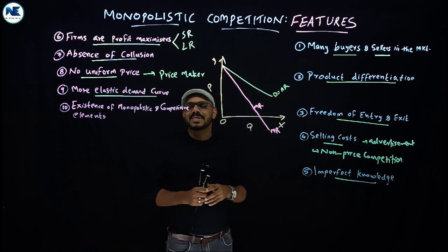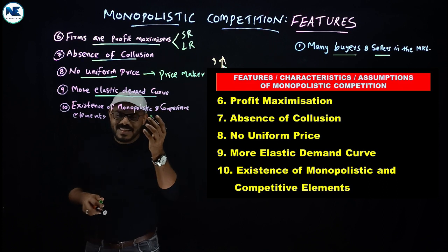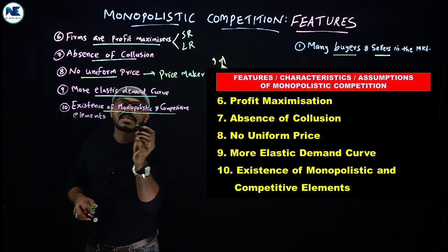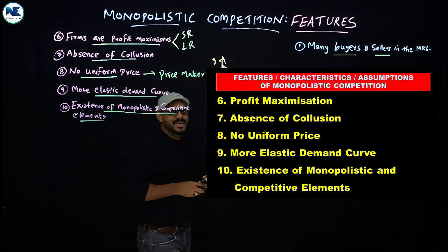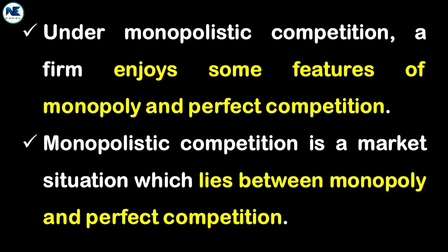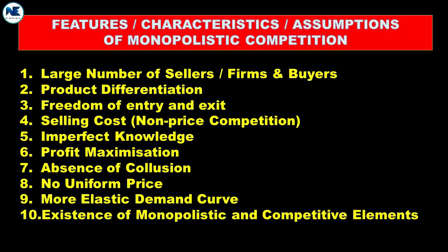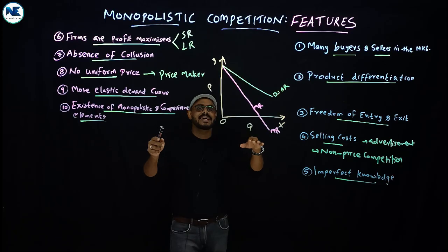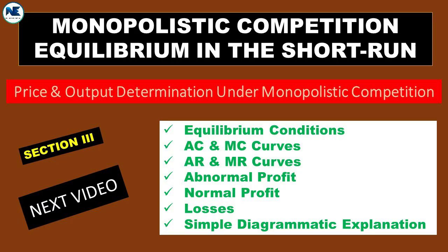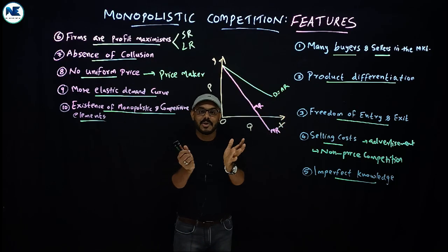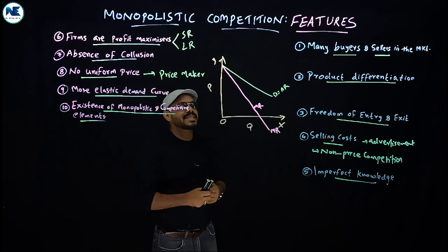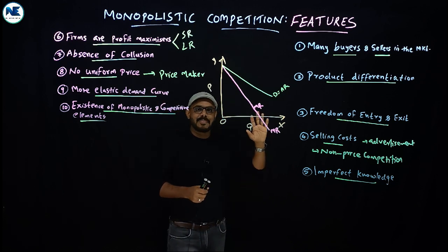The last point is the existence of both monopolistic and competitive elements, which is why this market structure is known as monopolistic competition — it is a combination of monopoly as well as perfect competition. In the coming video, we will discuss the equilibrium conditions in both the short run and long run under monopolistic competition in a simple way. Have a nice day, happy learning, thank you.